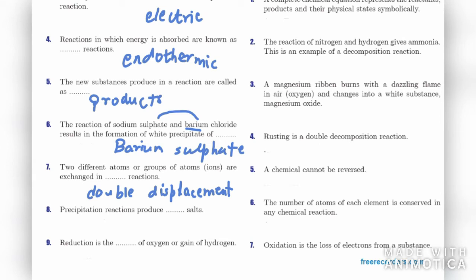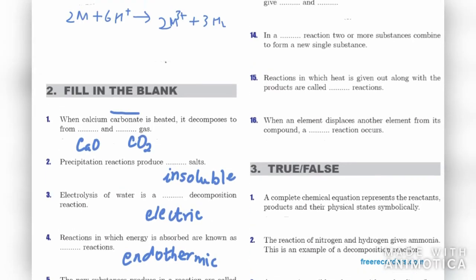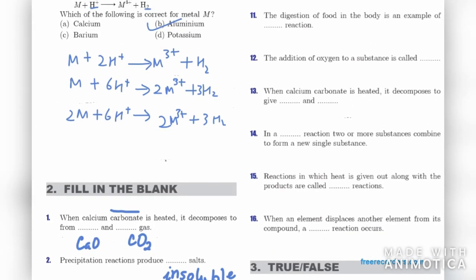Eighth: precipitation reactions produce insoluble salt. Ninth: reduction is the loss of oxygen or gain of hydrogen. Tenth: the digestion of food in the body is an example of a decomposition reaction, as food is decomposed into smaller parts. Eleventh: the addition of oxygen to a substance is called oxidation.